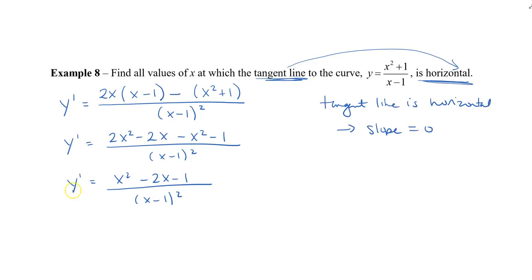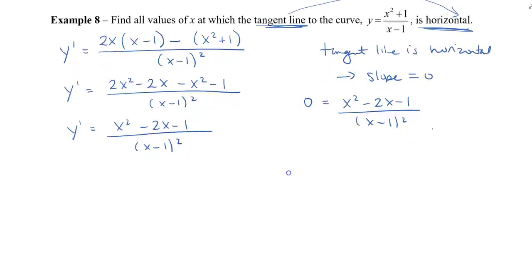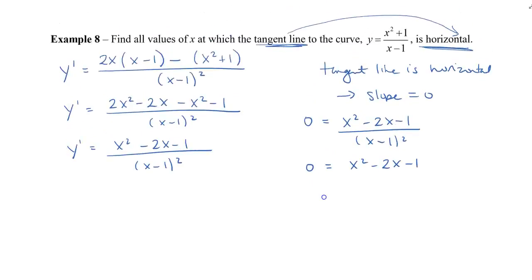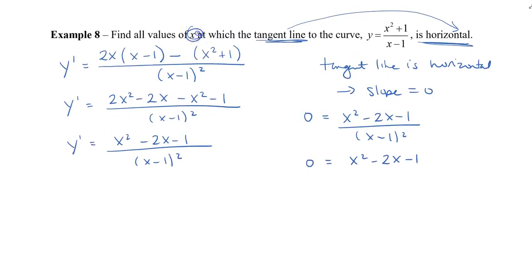The slope is y prime, so we set 0 equal to (x squared minus 2x minus 1) divided by (x minus 1) squared. To get rid of the denominator, we multiply both sides by (x minus 1) squared, which disappears. So we get 0 equals x squared minus 2x minus 1. This is not factorable, and what we want to do is find x, so we plug it into the quadratic formula.